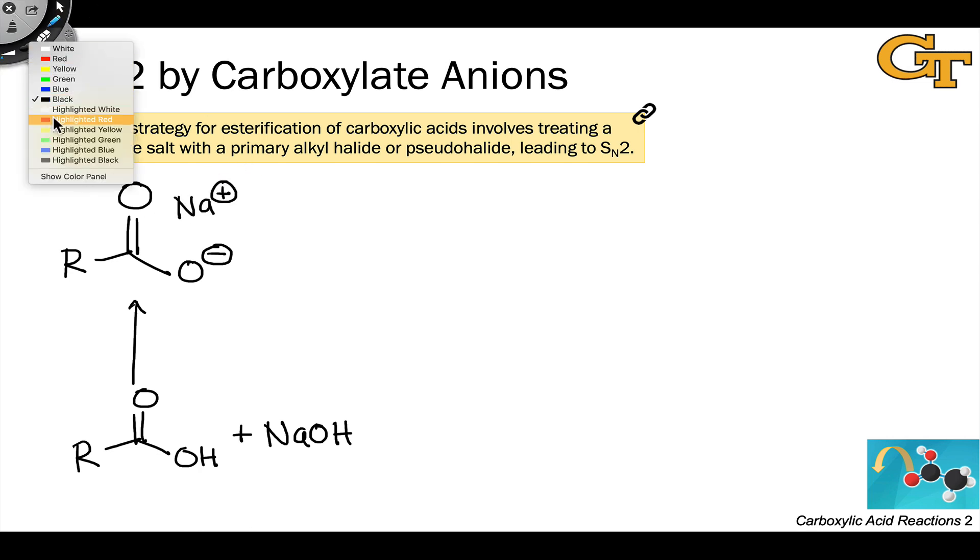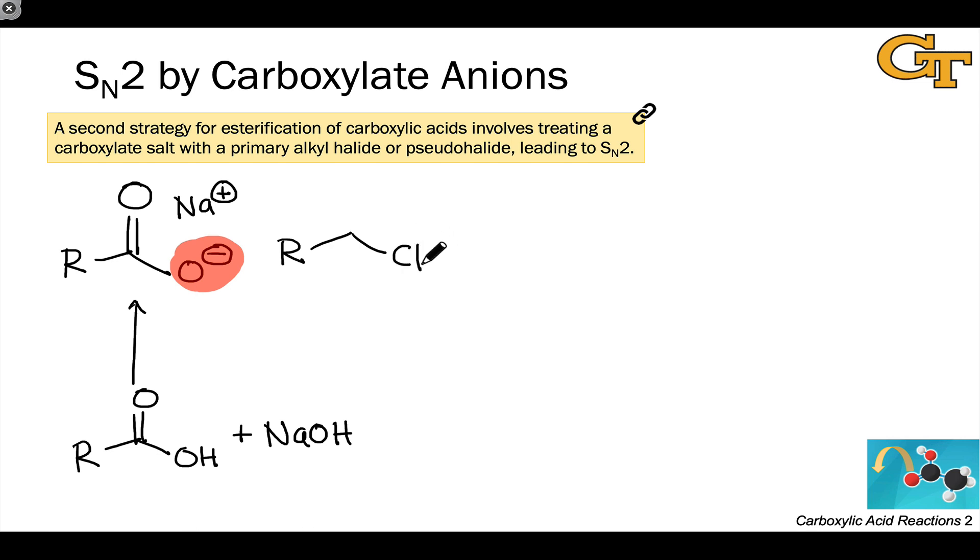And so if we want to make an ester where the alkoxy group is appropriately substituted, really it needs to be primary or, in some cases, secondary. We can use an SN2 reaction to install that alkyl group, and the idea here is a simple SN2 process.